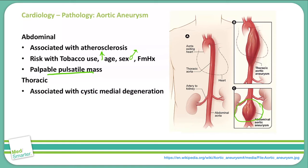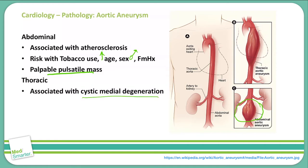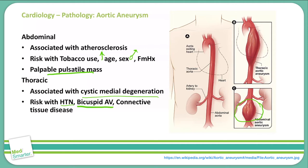Thoracic aortic aneurysms, located in the thoracic chest, are associated with cystic medial degeneration. We increase our risk for thoracic aortic aneurysms with hypertension, a bicuspid aortic valve, and connective tissue diseases such as Marfan syndrome.